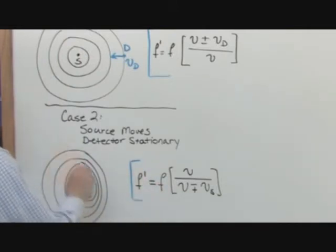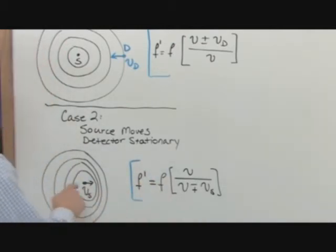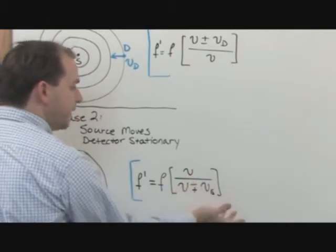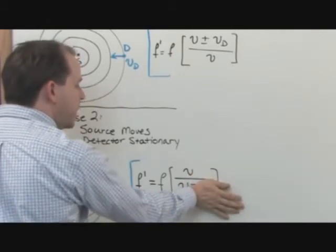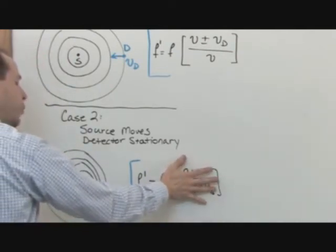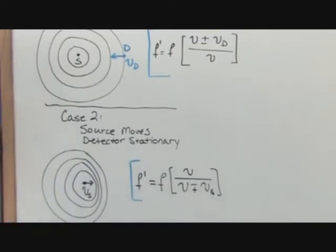This is the frequency, the normal undisturbed frequency that you really are sending out of the source. Now notice, if your source is actually not moving at all, let's say you put zero in here, then what you're going to have here is V over V, which is one, which means this whole thing would go to one and the Doppler shifted frequency would not be any different than the frequency that you emitted.